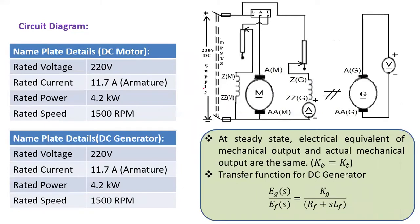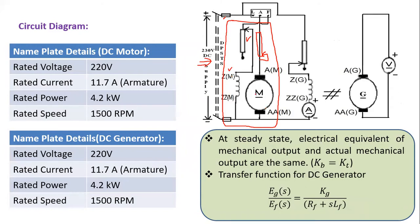Observing the circuit: there is a DC supply, DPST switch, and fuse. The motor is connected with the motor field rheostat at minimum resistance position. The armature rheostat is connected in the armature circuit at maximum resistance position. Z(M) represents the motor field winding, and AA represents the motor armature.